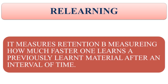Re-learning measures retention by measuring how much faster one learns a previously learned material after an interval of time. The comparison of retention scores at the time of original learning and second learning shows improvement in terms of time and number of trials taken. By re-learning, there is a saving of time, so this method is also known as the Saving Method. The same material is learned by the same subject up to the same learning criteria on two different occasions separated by a time interval.